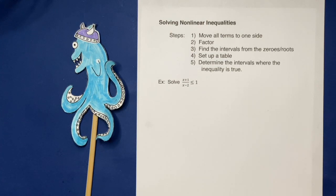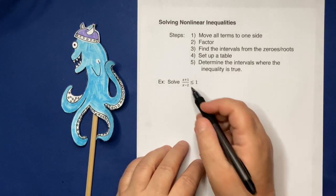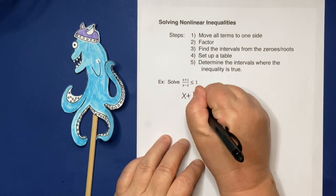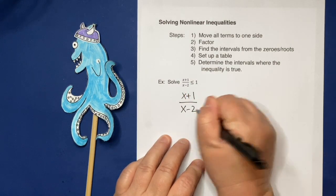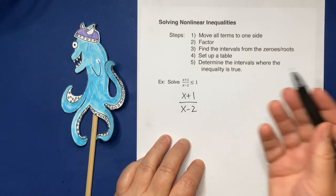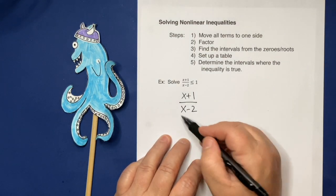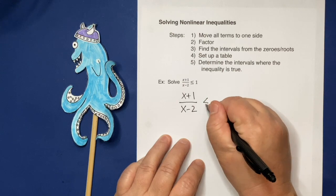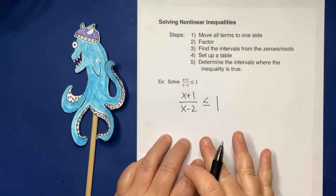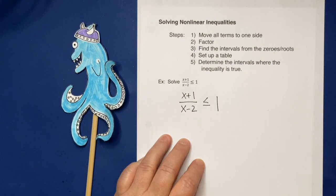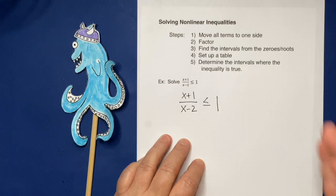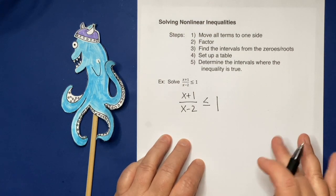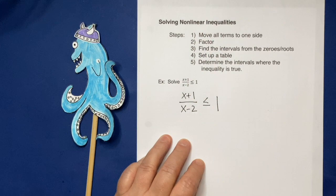Basically, nonlinear is any time you see something other than just a basic x. So in this case, we've got x plus 1, which by itself would be linear, except that it's over x minus 2, and this rational expression or fraction basically makes it nonlinear. Some other things that would make this situation nonlinear: if you had an x squared or an x cubed, if you had x in some other situation other than just plain old x just sitting there with maybe some numbers, then you've got something that's nonlinear.